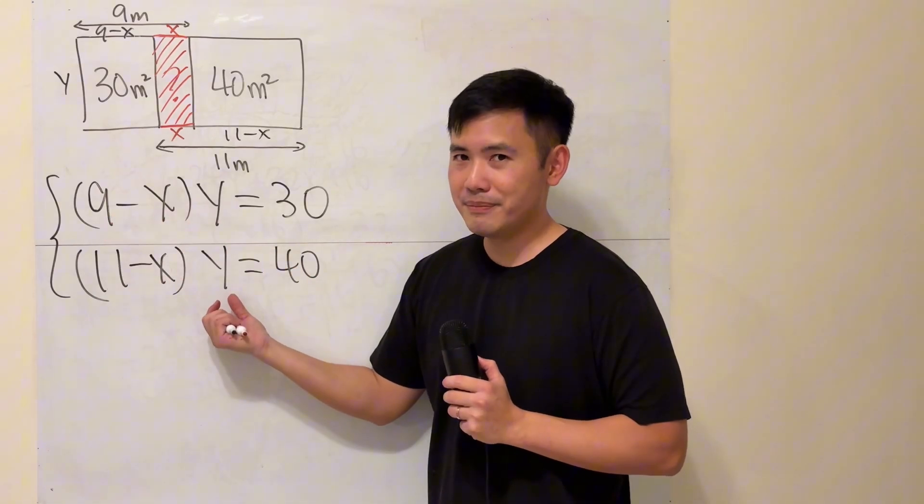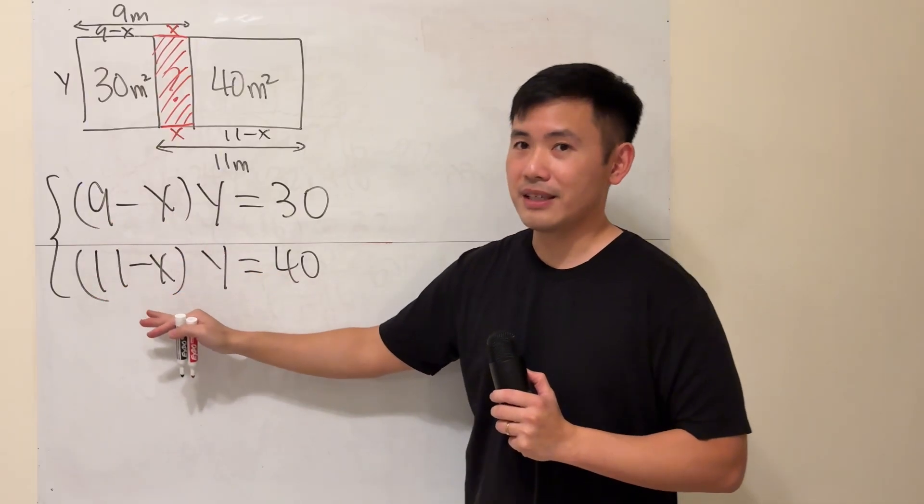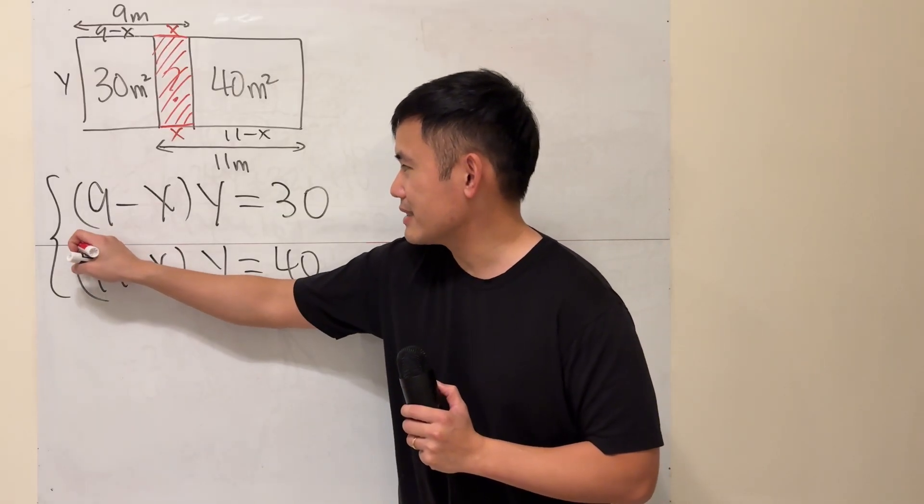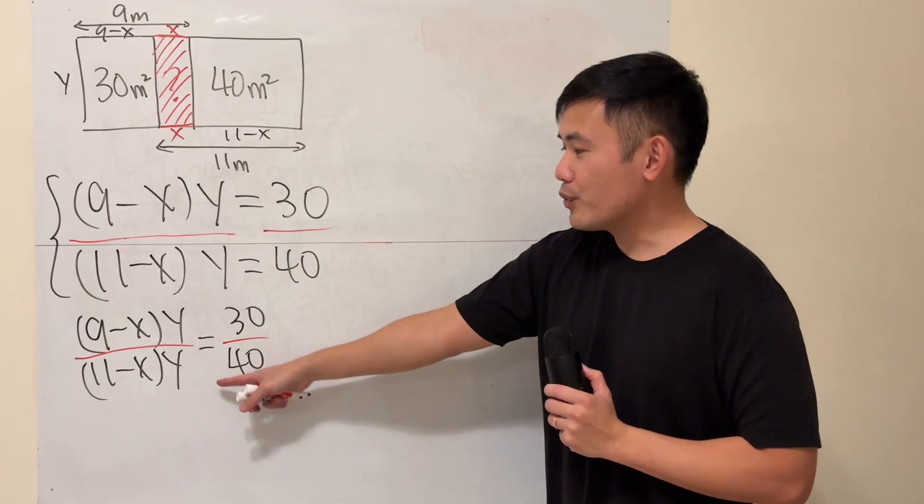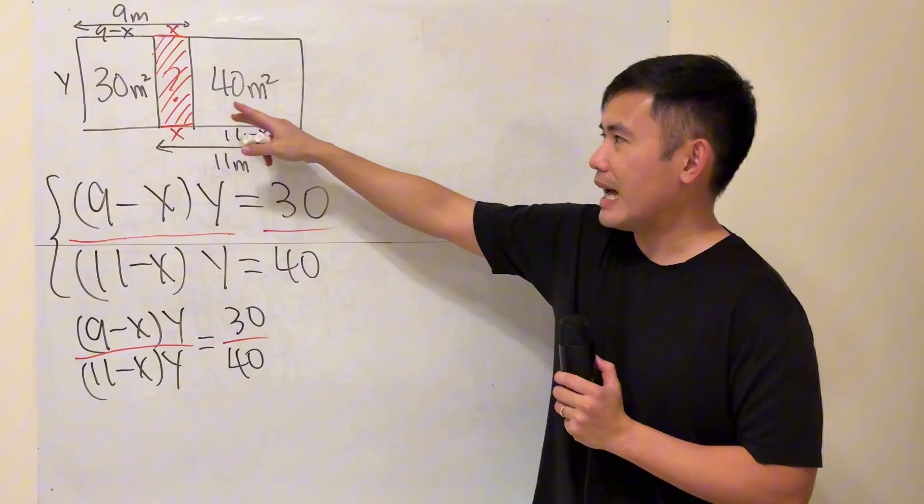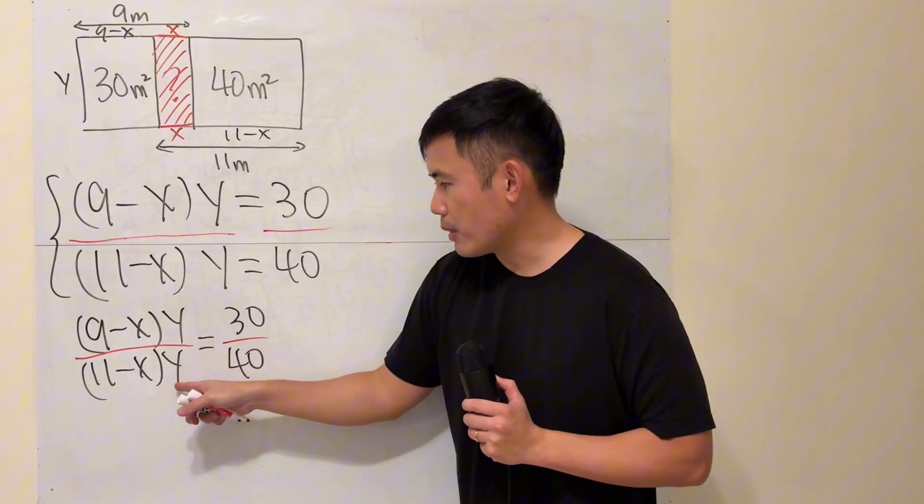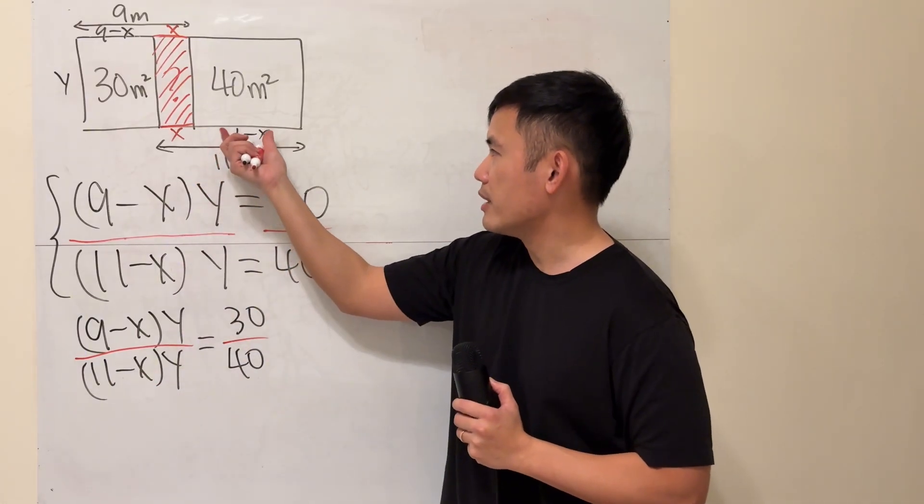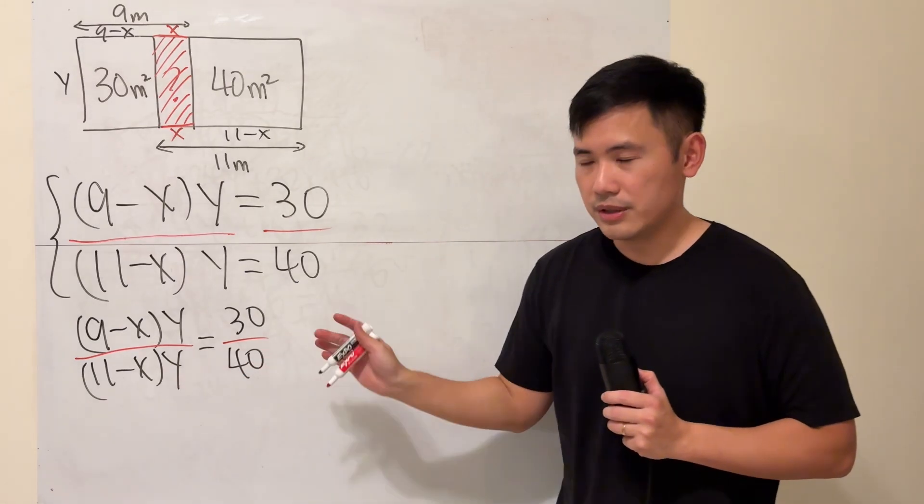I'm going to show you: because they both have 'times y,' I'm just going to take this equation divided by the second one. Divide this by this and this by this. Of course, y cannot equal zero, because otherwise we wouldn't have any area, so dividing by this part is totally legit. Likewise, x cannot be 11, because otherwise we can't have area either. So this is totally okay.